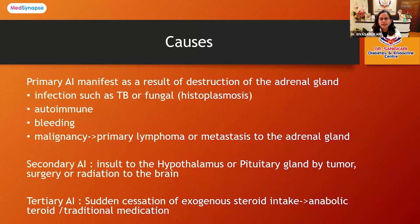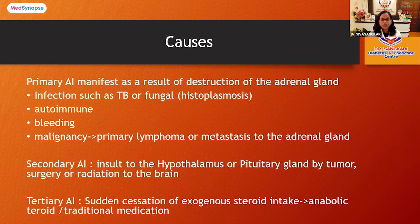The causes of adrenal insufficiency can be either primary or secondary. Primary adrenal insufficiency manifests as a result of destruction of the adrenal gland, which can be caused by infection such as TB or fungal, autoimmune causes, hemorrhage, or malignancy — either primary or metastatic. Secondary adrenal insufficiency is due to a pituitary gland tumor, surgery, or radiation to the brain. Tertiary adrenal insufficiency is due to cessation of exogenous steroids or an insult to the hypothalamus.